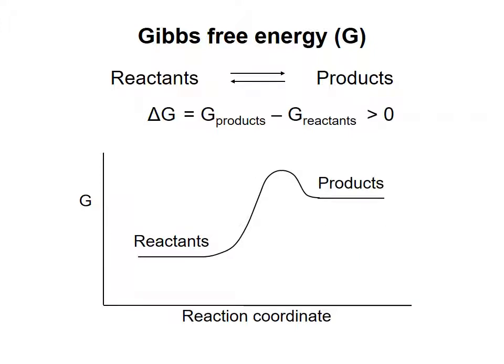One can also imagine a situation in which the Gibbs free energy of the products is greater than that of the reactants, such that the delta G is positive. In this case, the net reaction will proceed backwards, as written, from the so-called products to the reactants. The forward reaction, as written, is energetically unfavorable and will not proceed spontaneously.